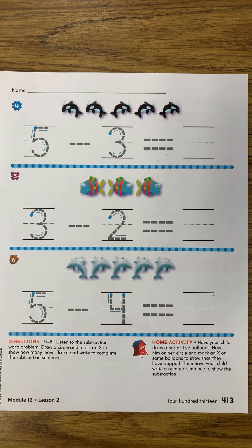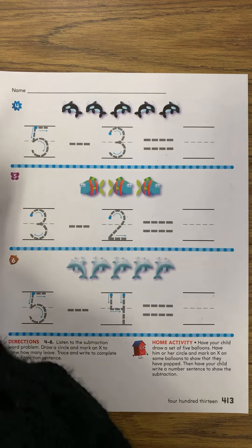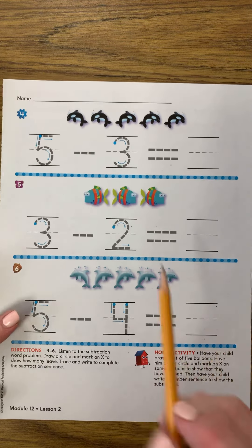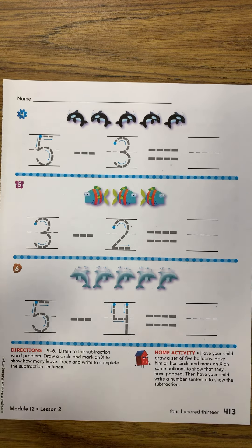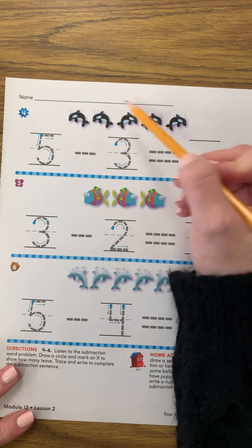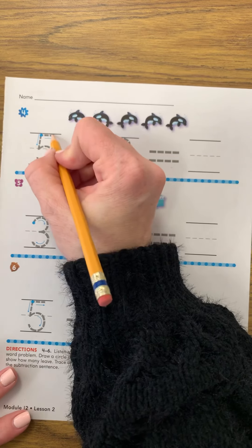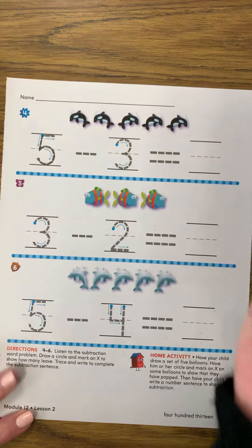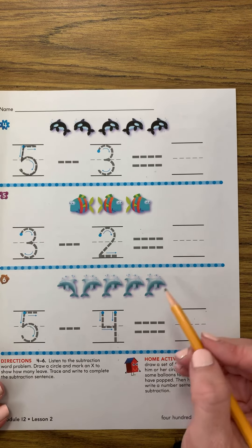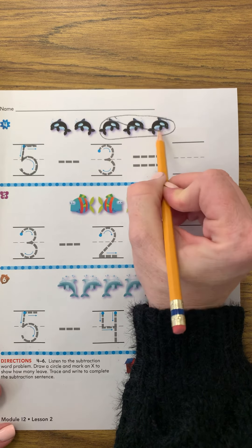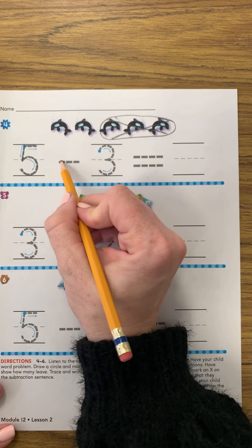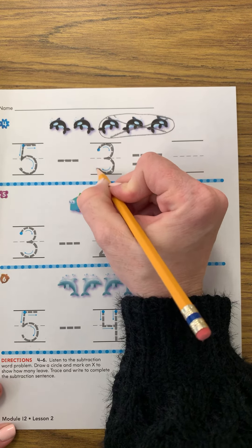Here we are with some whales. There are five whales: one, two, three, four, five — five whales. Three whales swim away. How many whales are left? So we counted our five whales: one, two, three, four, five whales that we started with. Five. And how many left? Three. So we're going to circle three and put a big old X on them. So five minus three equals.